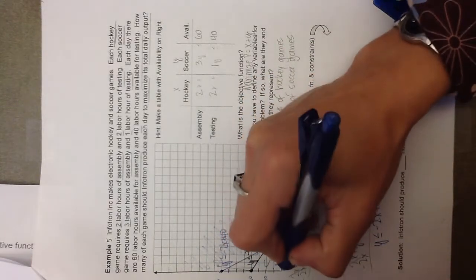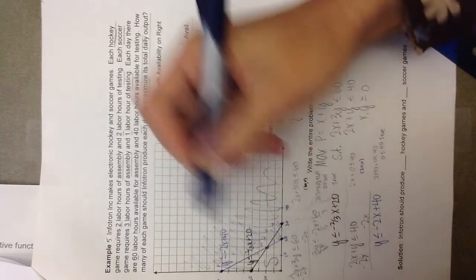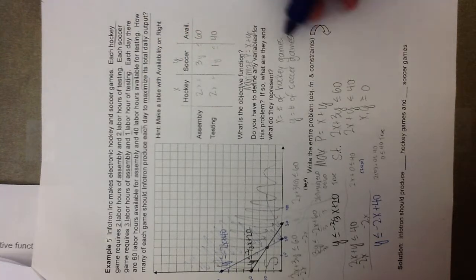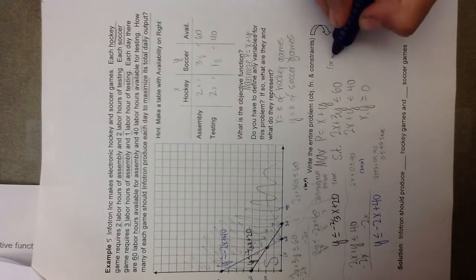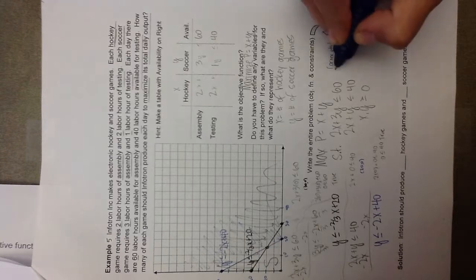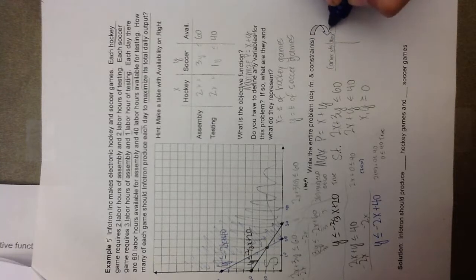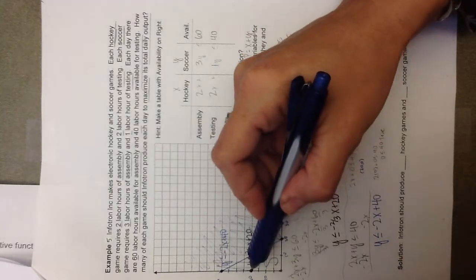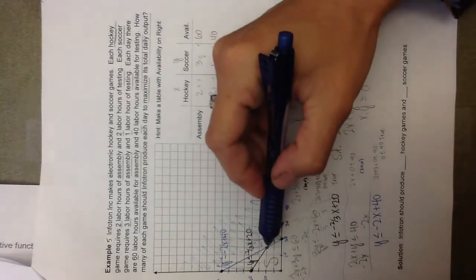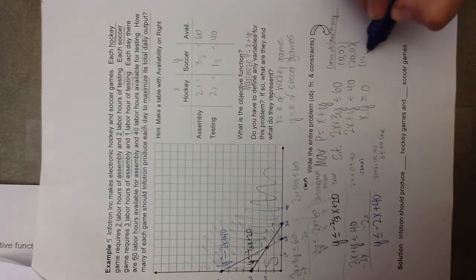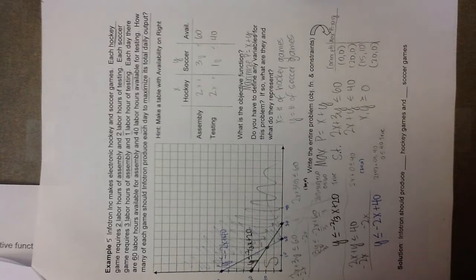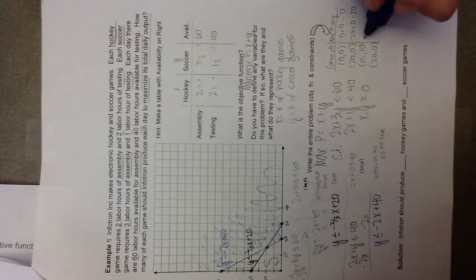Therefore my feasible set is defined by four corner points, which are very easily identifiable. I'll construct a table for the corner points alongside the objective function, max P = X plus Y. The corner points are (0, 0), (20, 0), (15, 10), and (0, 20). All we have to do is add the X and Y coordinates to find the value of the objective function at each corner point.